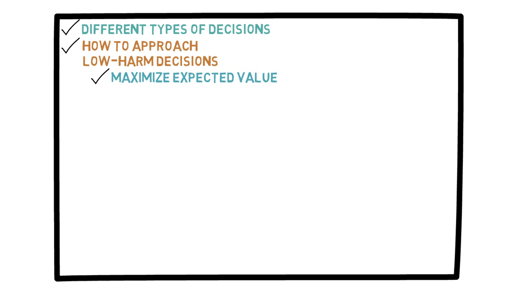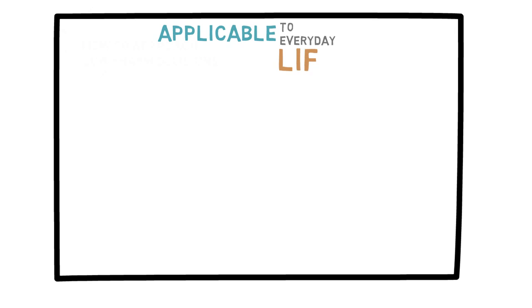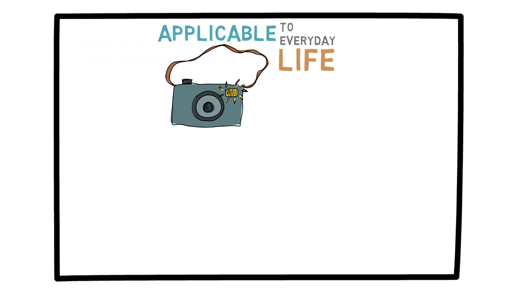In this video, I would like to discuss this issue with an example that is more applicable to everyday life. Suppose you buy a new camera and a company offers insurance or a warranty on the camera. Say the camera costs $200 and the company sells a 3-year warranty for $50. If you buy the warranty and the camera breaks in the next 3 years, they will replace it. How do they come up with the price of $50?